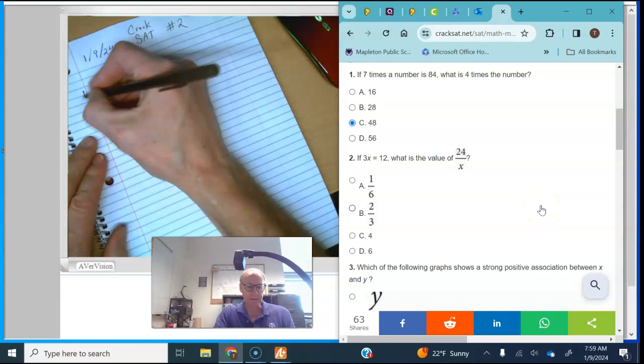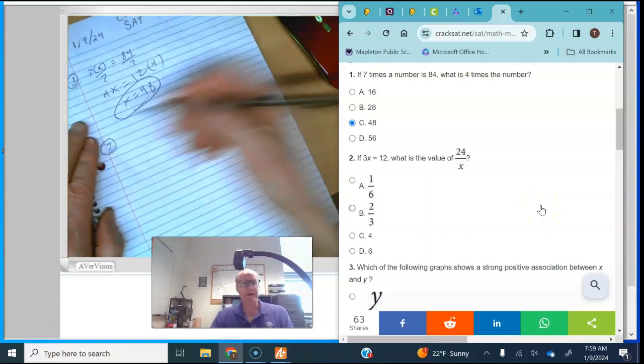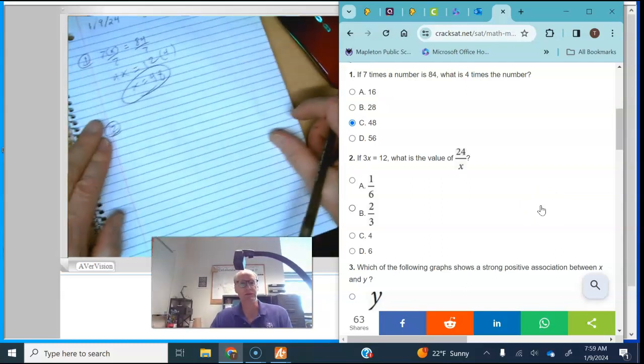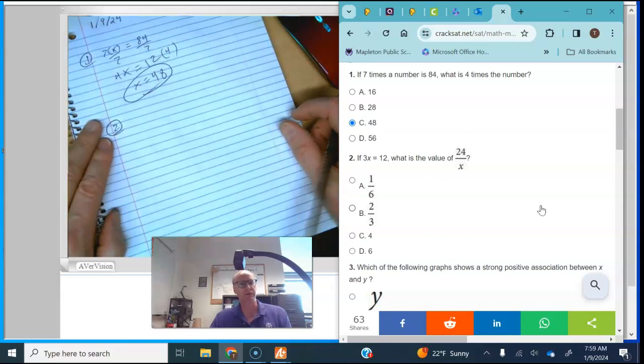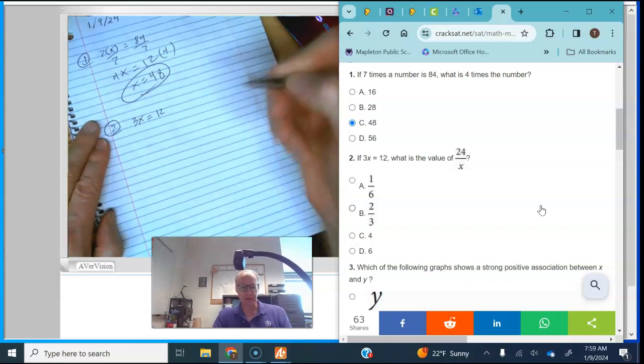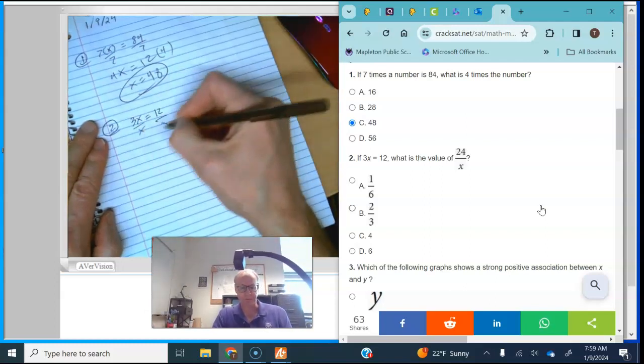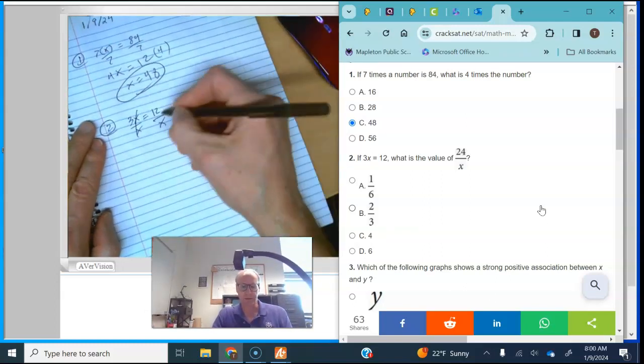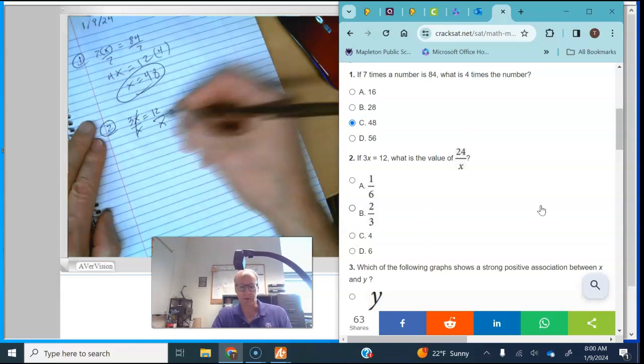Now I like number two because what it is, is it's asking you to solve not for a variable but for a variable expression. So I have 3x equals 12. Now the trick here is to divide by x on both sides and what you get is 3 is equal to 12 over x.